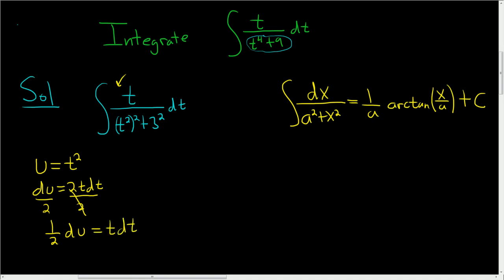And now we're ready to make our substitution in full force. We have t dt that's right here and that's equal to 1 half du. So we can pull the 1 half out. So we have 1 half du over and then we have u squared that's t squared, u is t squared plus 3 squared.